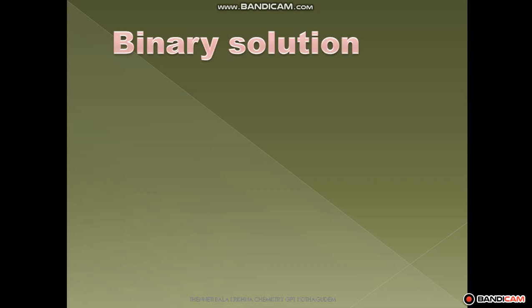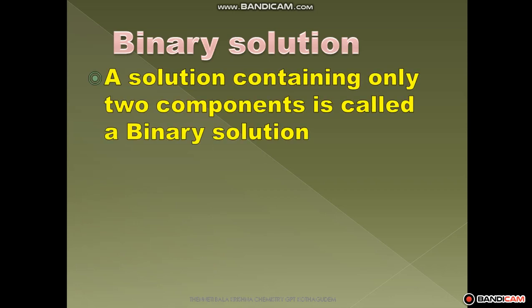A homogeneous mixture means one component becomes uniform with another component. It does not change the chemical properties. We can separate the components of the solution by a physical process. The solution containing only two components is called a binary solution.